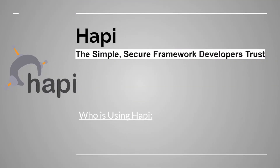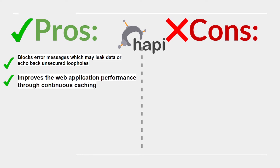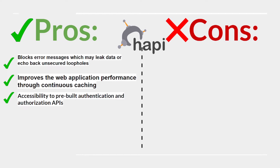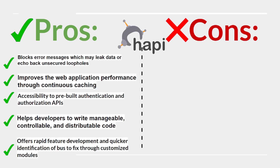Hapi is a simple, secure framework developers trust. Used by Salesforce and Stripe. Pros: blocks error messages that may leak data or expose unsecure loopholes, improves web application performance through continuous caching, provides access to pre-built authentication and authorization APIs, helps developers write manageable, controllable, and distributable code, and offers rapid feature development with quicker bot identification through customized modules.